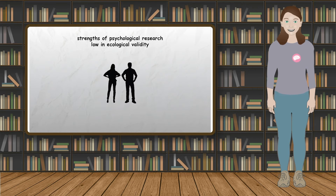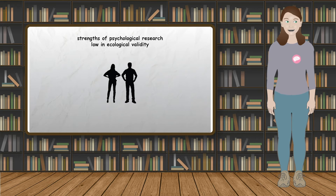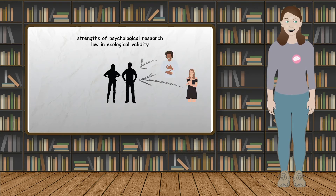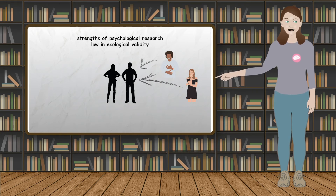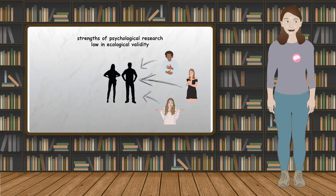A potential weakness of psychological research that is low in ecological validity is that it is arguably reductionist, since the situation is very controlled and only looks at one factor. It simplifies complex human behavior by isolating the independent variable and does not look at the combination of factors.